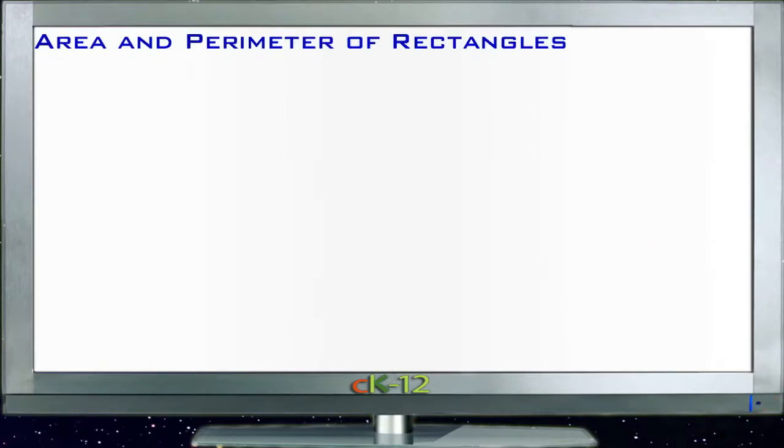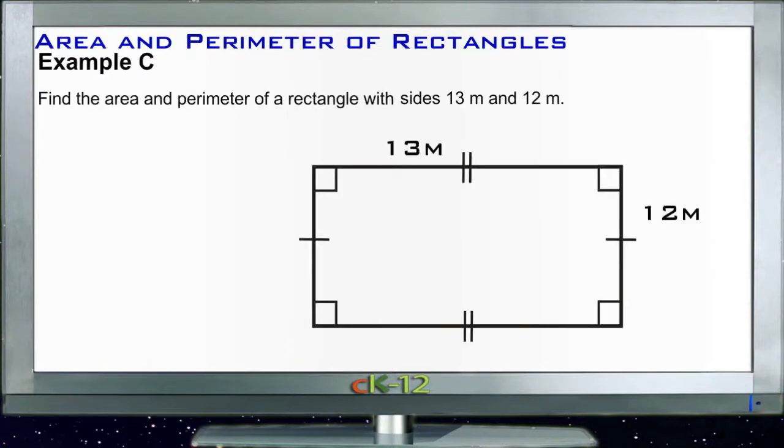All right, next, example C. Example C asks us to find the area and perimeter of a rectangle that has sides that are 13 meters and 12 meters. Yikes, should have a calculator ready for this one. All right, so we have our base, that's 13, and our height, that's 12.